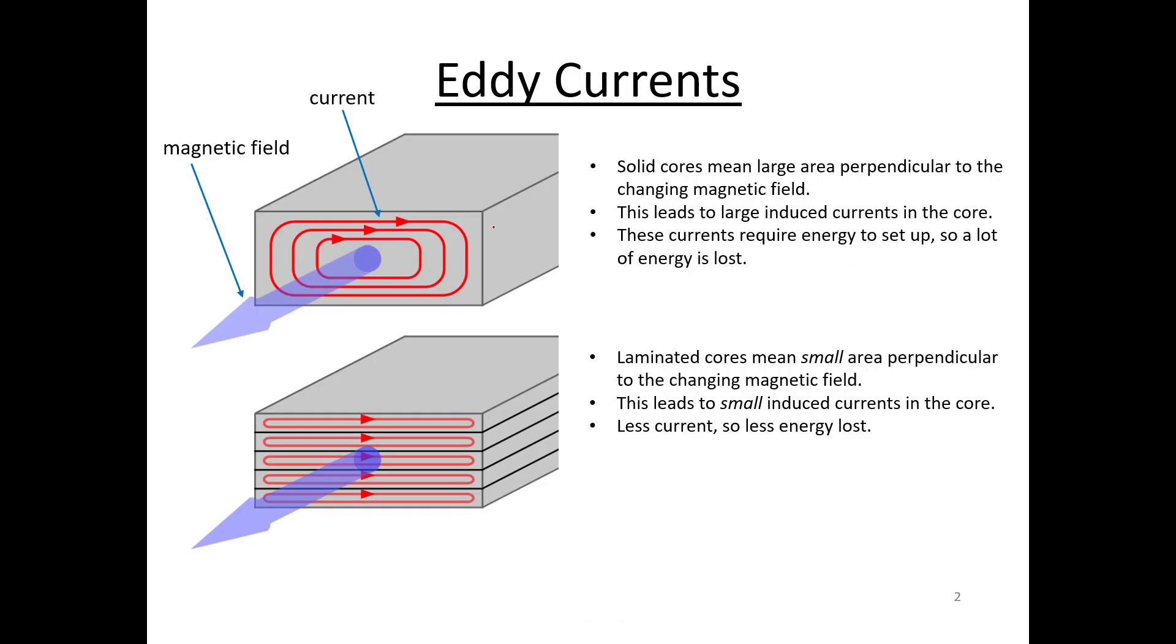That turns out to be a really important thing because of something called an eddy current. If you were to imagine this one right here, that one being an example of a transformer with a solid core. Solid cores, as you can see in the first point here, mean large area perpendicular to the changing magnetic field, so blue arrow here being magnetic field, and the resulting induced currents. We're changing magnetic field, and even though we don't have a loop of wire, we have this big chunk of conducting material. What you get when you change the magnetic field here is eddy currents going around and around, eddying, swirling. When you have a solid core with a large area that captures a bunch of different field lines, it leads to large induced currents in the core. These currents, you need energy to make charges all go in a particular direction, and so you get a lot of energy being lost in that process.